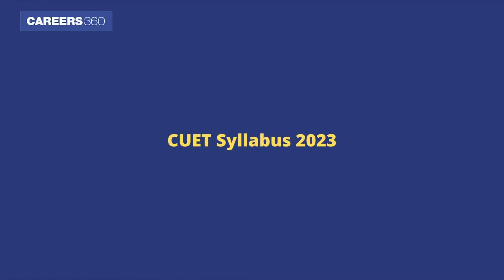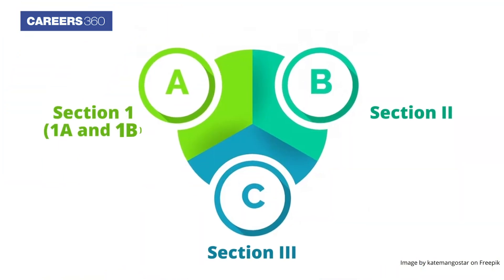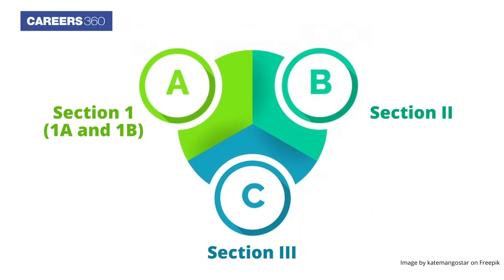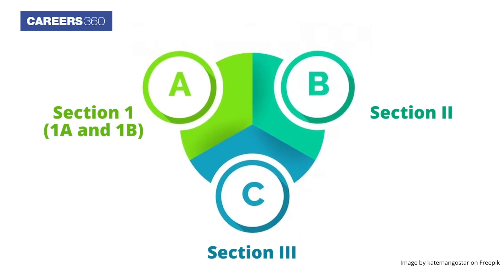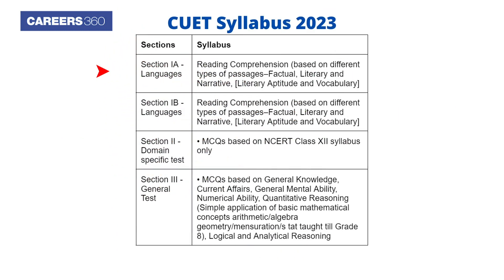CUET syllabus 2023 is divided into three sections: Section 1 (1A and 1B), Section 2, and Section 3. Sections 1A and 1B include questions from languages. Section 2 includes domain-specific questions. Section 3 will have questions from the general test.